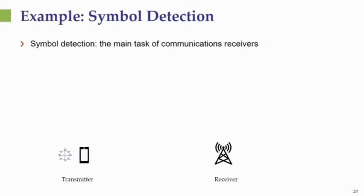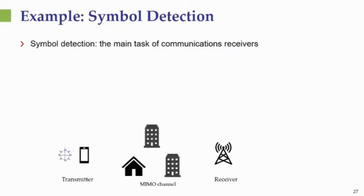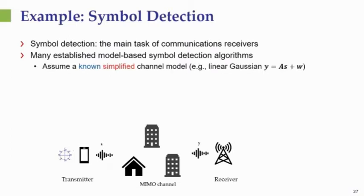To get a better sense of where machine learning can help in communications and why it is needed, let's take a closer look at one of the most basic operations: symbol detection. In a standard detection problem, a transmitter wants to transmit symbols to a receiver over a given channel — in our case a MIMO channel. The transmitter sends a signal S, and we obtain output Y. To recover S from Y, we rely on a model describing the relationship between Y and S, with the most popular being the linear Gaussian model, where the received signal is a linear combination of transmitted symbols plus Gaussian noise.